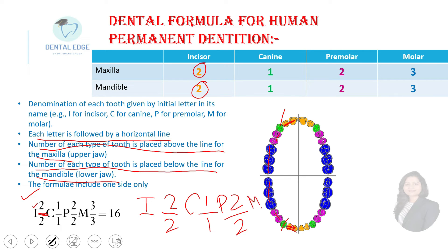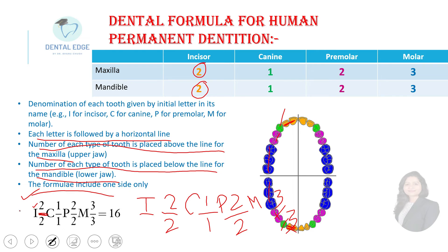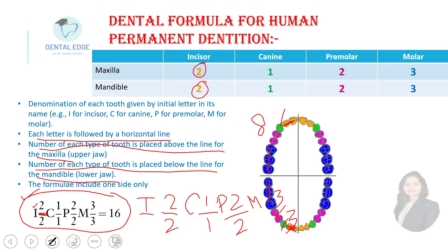So this is the final permanent dental formula: I 2/2, C 1/1, P 2/2, M 3/3. Two incisors in maxilla and mandible, one canine in maxilla and mandible, two premolars in maxilla and mandible, and three molars in maxilla and mandible — totaling 16 teeth on either side. The formula includes only one side, either right or left.